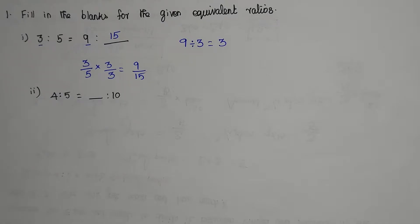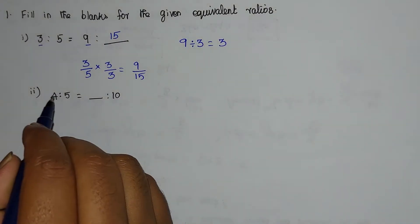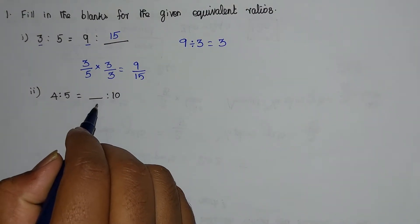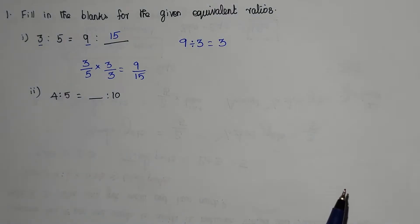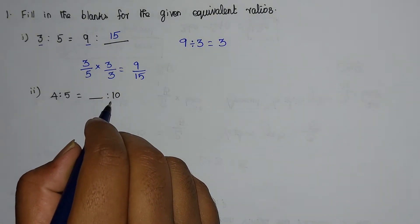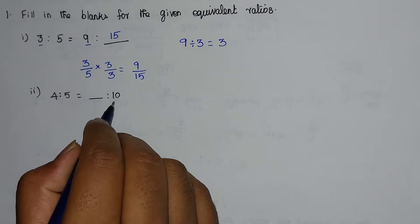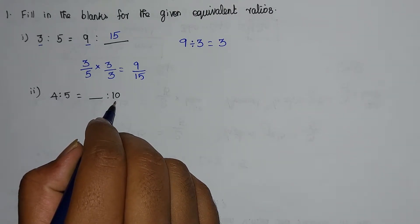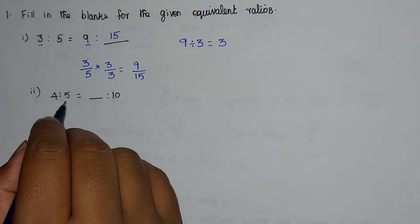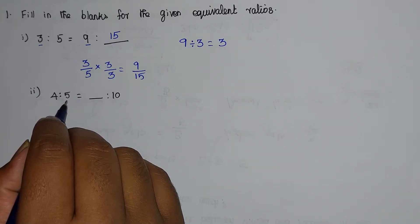Now we are going to solve problem number 2: 4 is to 5 equal to blank is to 10. Now we have denominator in the right hand side. The right hand side denominator value divided by left hand side denominator value.